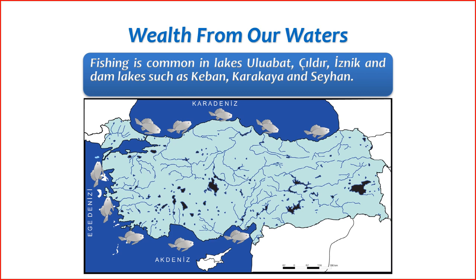1. Uluabat Lake — located in the Bursa province, known for its diverse aquatic ecosystem and popular for fishing. 2. Sıldır Lake — situated in the Ardahan province, the second-largest lake in eastern Anatolia, famous for its trout and other fish species. 3. İznik Lake — located in the province of Bursa, another significant freshwater lake where fishing activities take place. 4. Karakaya Dam Lake — located on the Euphrates River, the Karakaya Dam creates an important reservoir for fishing. 5. Seyhan Dam Lake — Seyhan Dam, on the Seyhan River, forms Seyhan Dam Lake, located in the Adana province and known for its fishing opportunities.